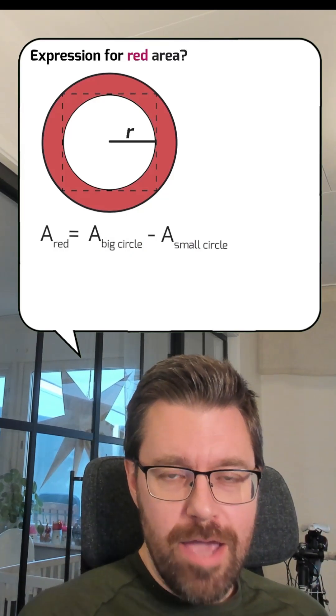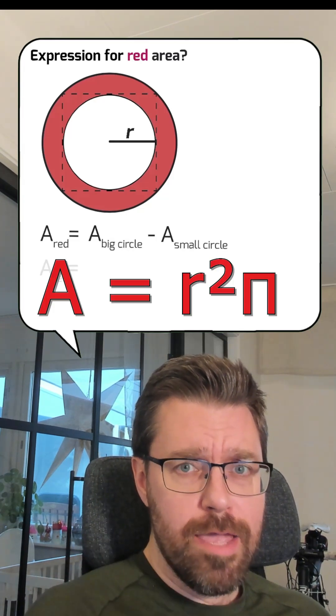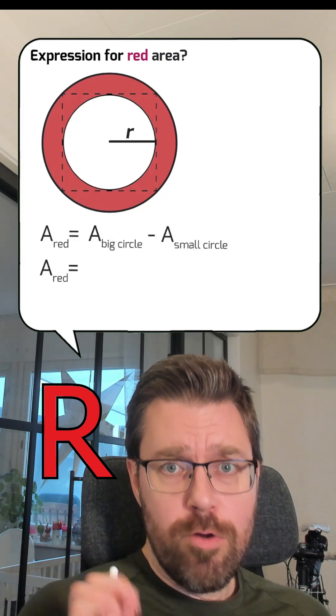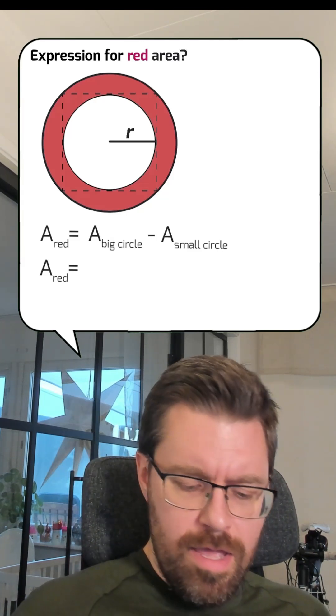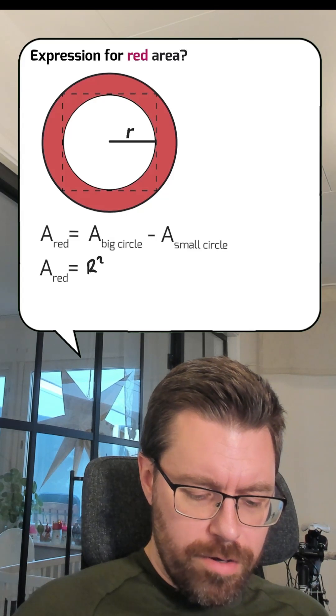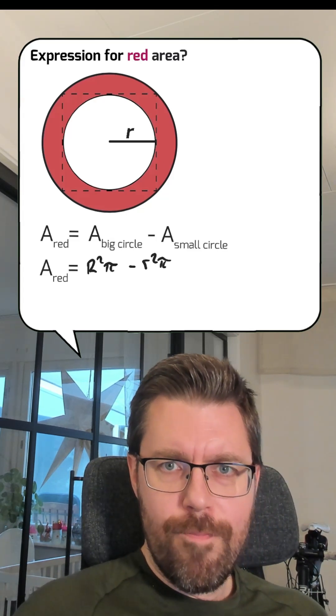Then you use minus, of course. Area of a circle is radius times itself and times pi. And if the big circle has the radius big R, then the area of the big circle is big R squared and times pi. And of the small circle, little r squared times pi.